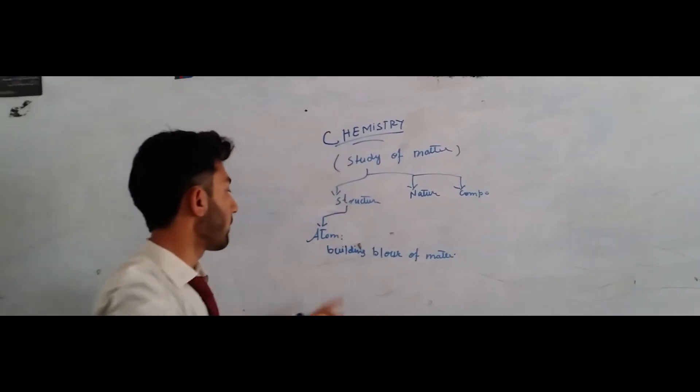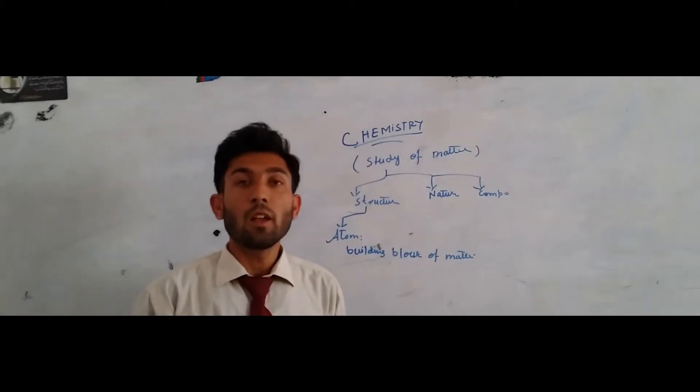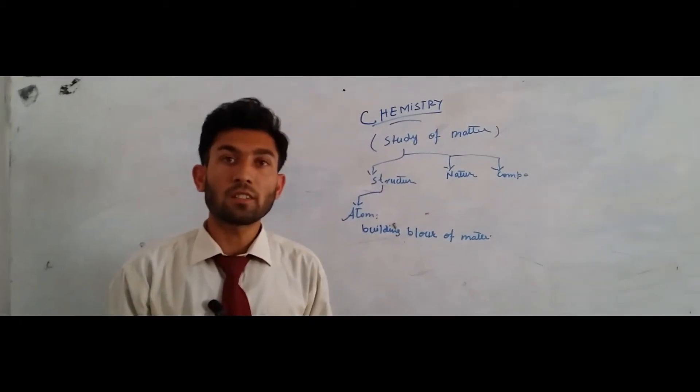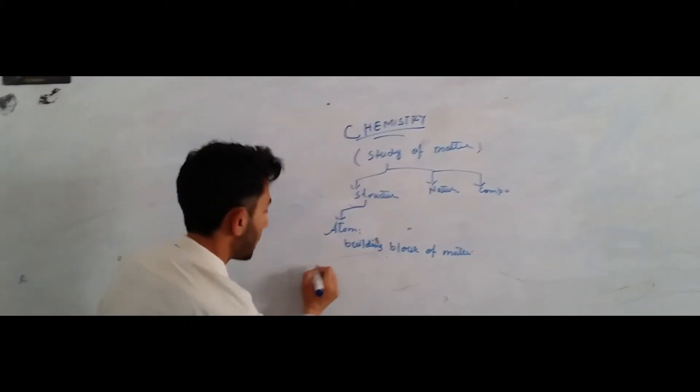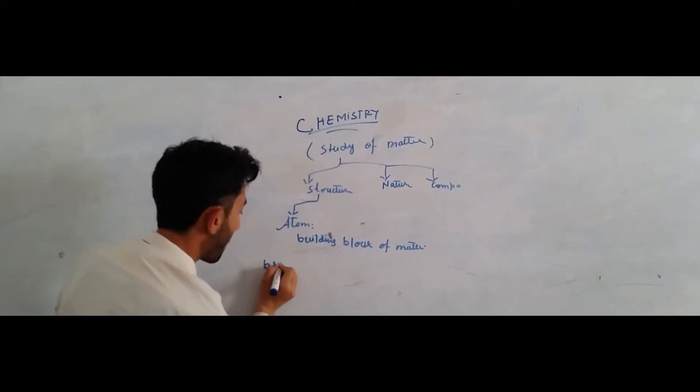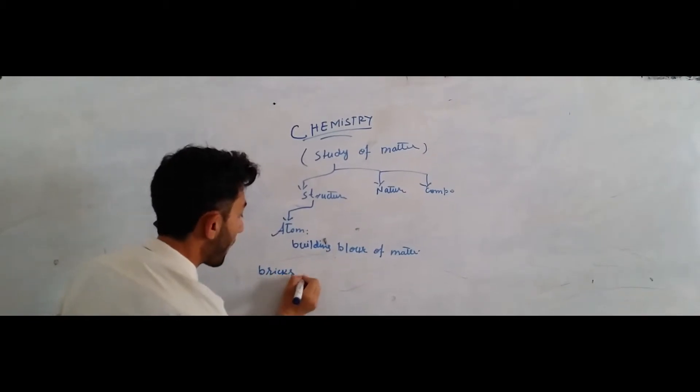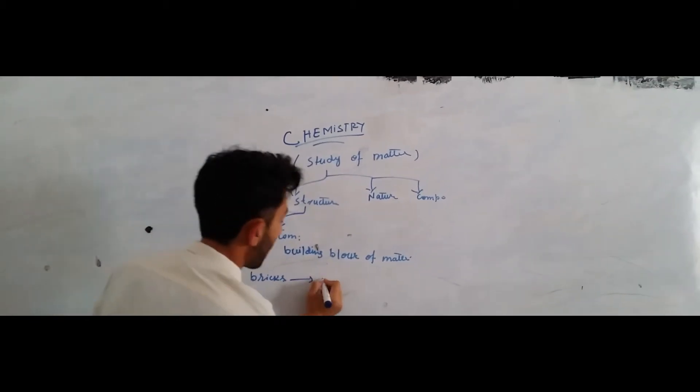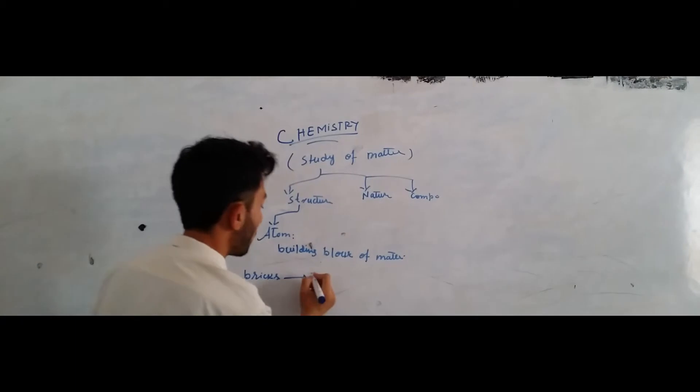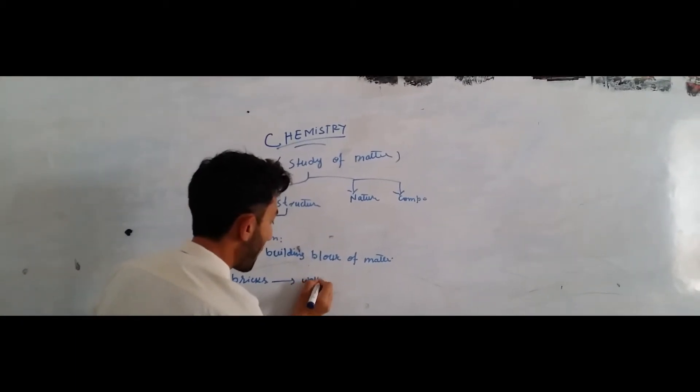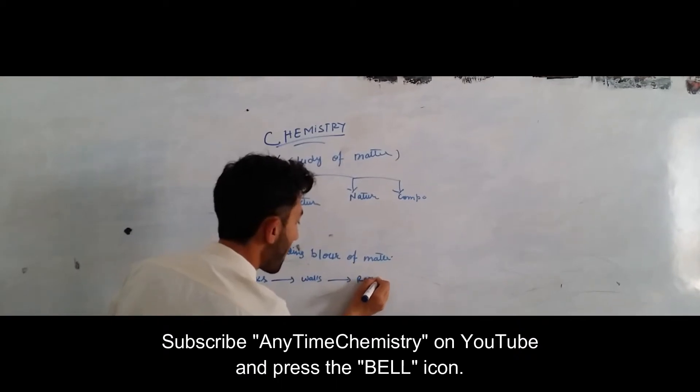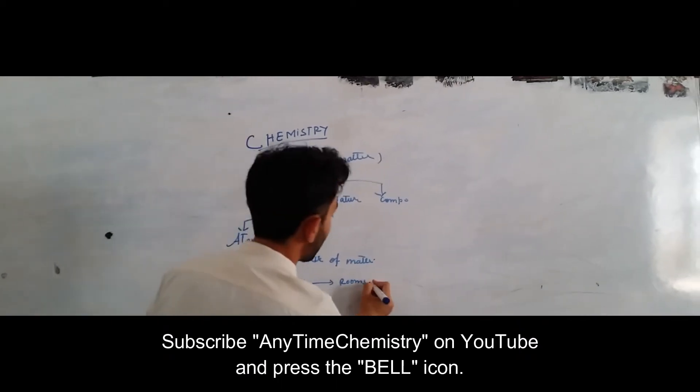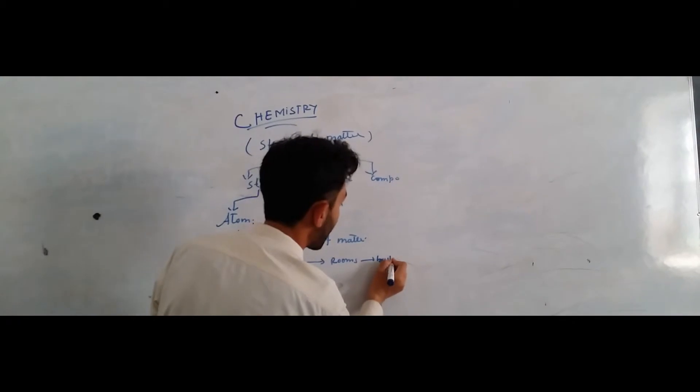What does the word building block mean? A building block is a unit that repeats itself and creates a bigger body. Like we take bricks, and by joining the bricks we get walls, and by joining the walls we get rooms, and by joining the rooms we get a bigger unit: building. This is a non-scientific example.